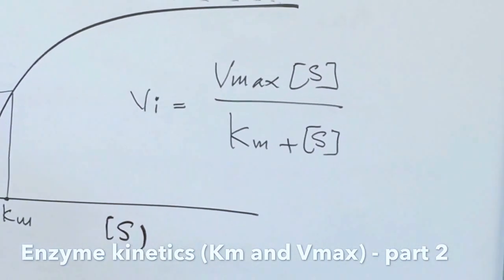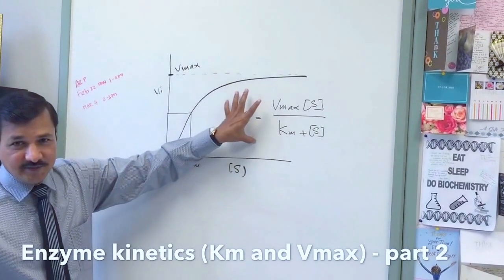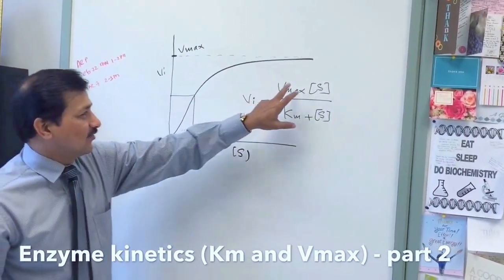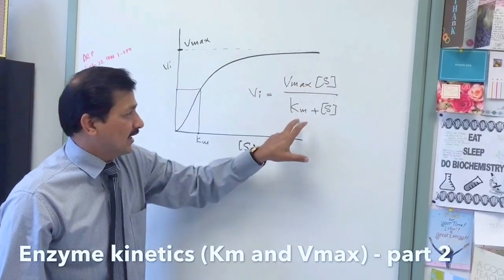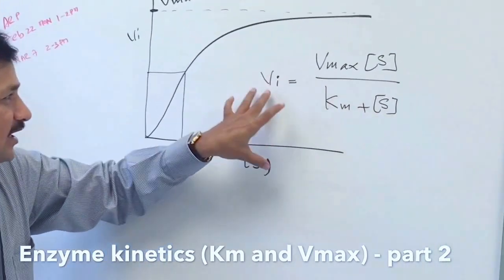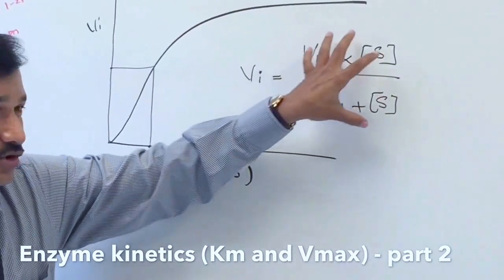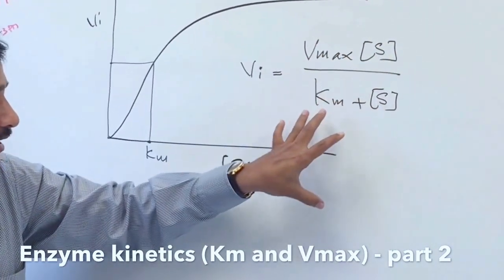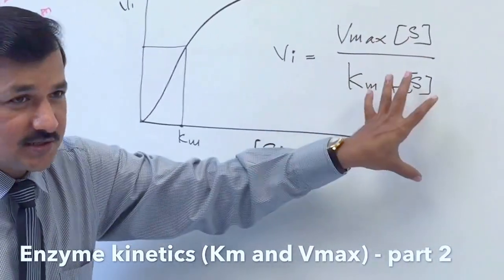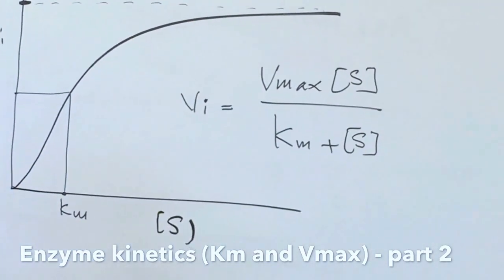This can be easily remembered by one method given by Trey. It is like Victoria's Secret keep secret. That's what is initial velocity equals Vmax into substrate concentration, that is Victoria's Secret, divided by Km plus substrate concentration, keep the secret. Victoria's Secret keep the secret. This is to remember this equation.